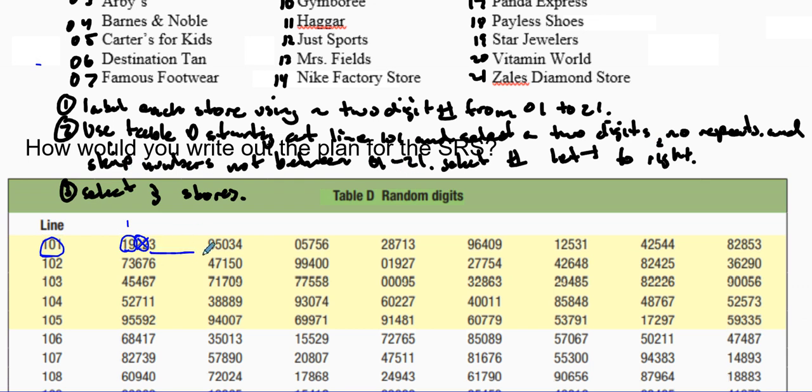Fifty is not between that. Thirty-four, skip that one as well. Zero five is our second store. Seventy-five, we skip that one. Sixty-two is not between those, skip that one. Eighty-seven, skip that one. And thirteen.